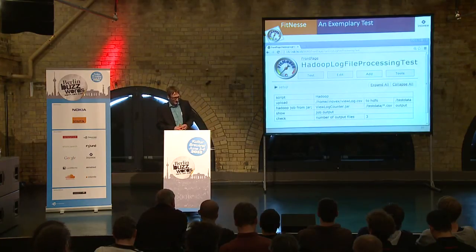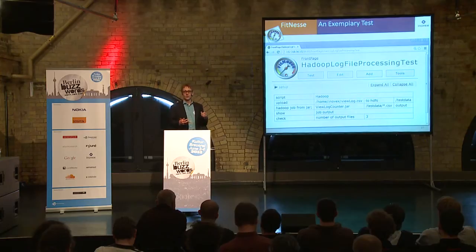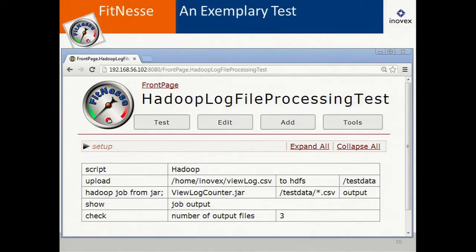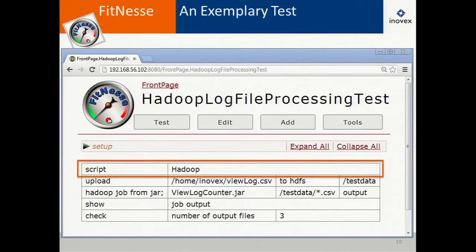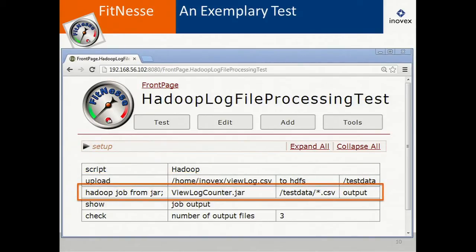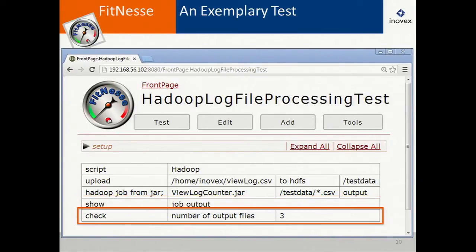Here's a direct example of what a FitNesse test looks like. We want to upload a file to HDFS, run a certain Hadoop job, and check if the number of output files is three. The test runs in your browser. You write test tables read line by line. It starts with the keyword 'script', then you upload a file from local hard drive to HDFS into a remote directory, start a Hadoop job from a JAR with input and output, show the job output on the wiki page, and finally check if the number of output files is three.